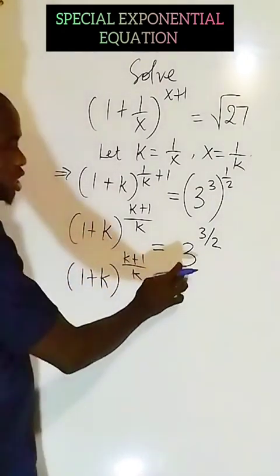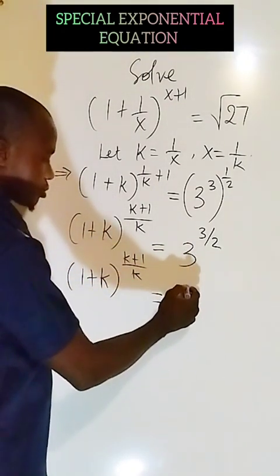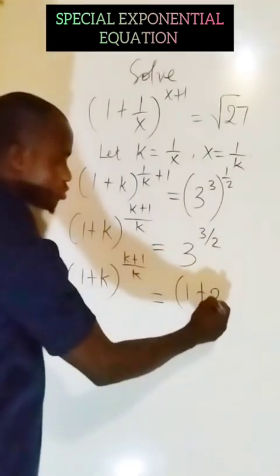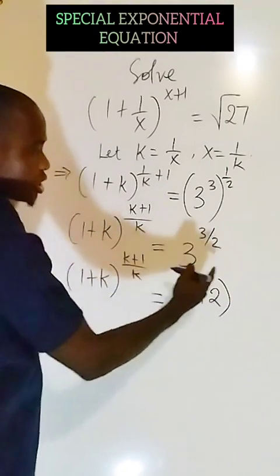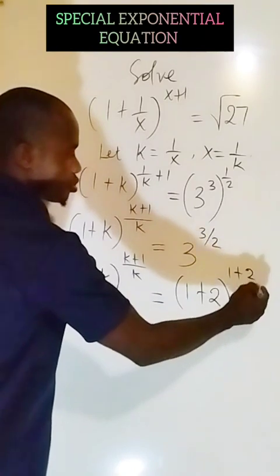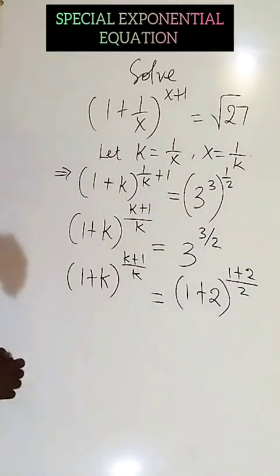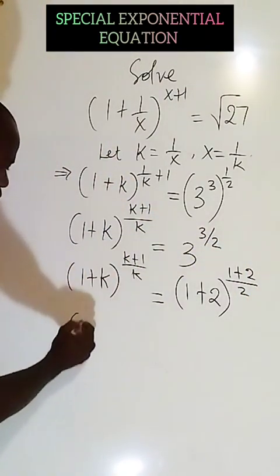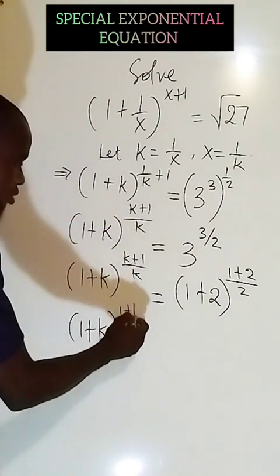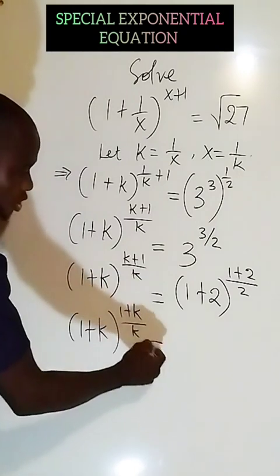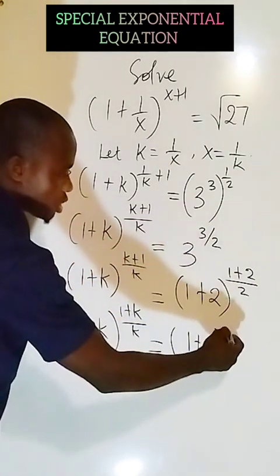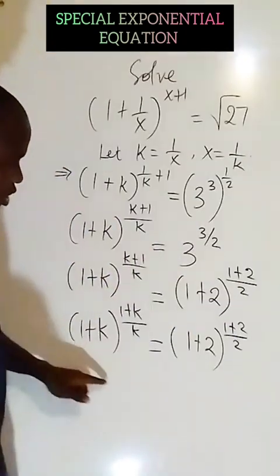Then equals to here. I can have 1 plus, so now I can split this 3 to be 1 plus 2, which gives us 3. And this also can be 1 plus 2 divided by 2. So from there, I have (1 + k), now let me write (k + 1) as (1 + k) over k, then equals to (1 + 2) raised to power (1 + 2)/2.